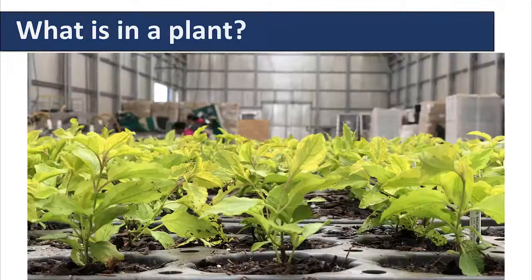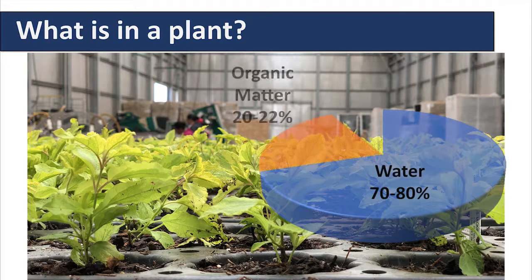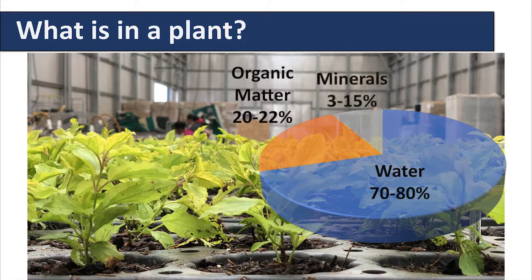What is in the plant? The plant is made up of 70 to 80 percent water, 20 to 22 percent organic matter, and the final 3 to 15 percent are minerals.